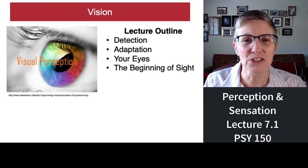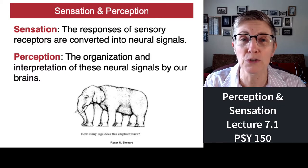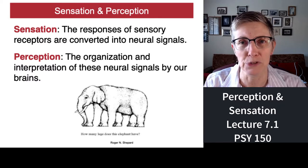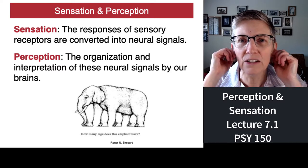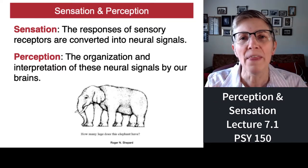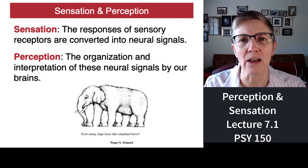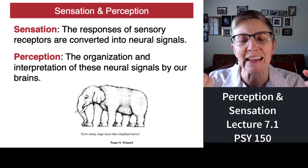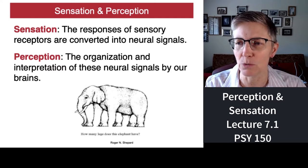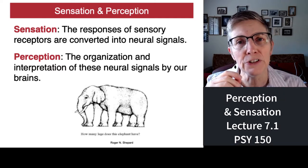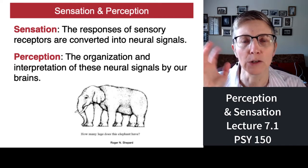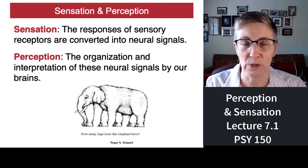I need to start this lecture with some terms: sensation and perception — two different processes that both happen all the time. Sensation is when the receptors in your eyes, in your ears, in your nose, in your mouth, in your skin detect something from the outside world. It's the encoding of information from the outside world — when input gets converted into action potentials that your brain can understand. That's sensation.